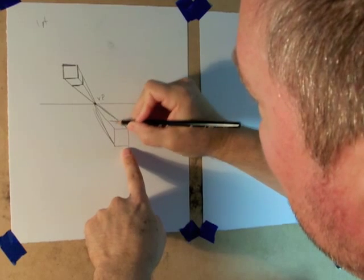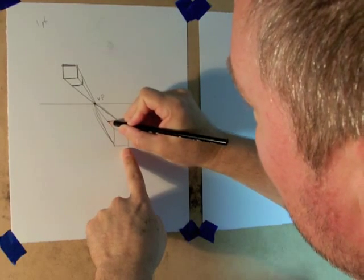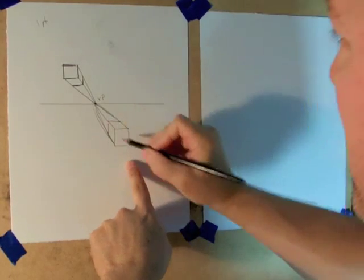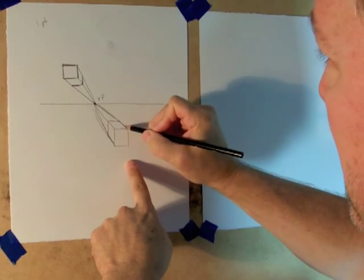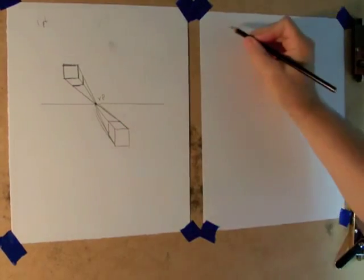So here again, very important, keep those lines straight up and down, straight horizontal, and you have your illusion of a three dimensional box using one point perspective.